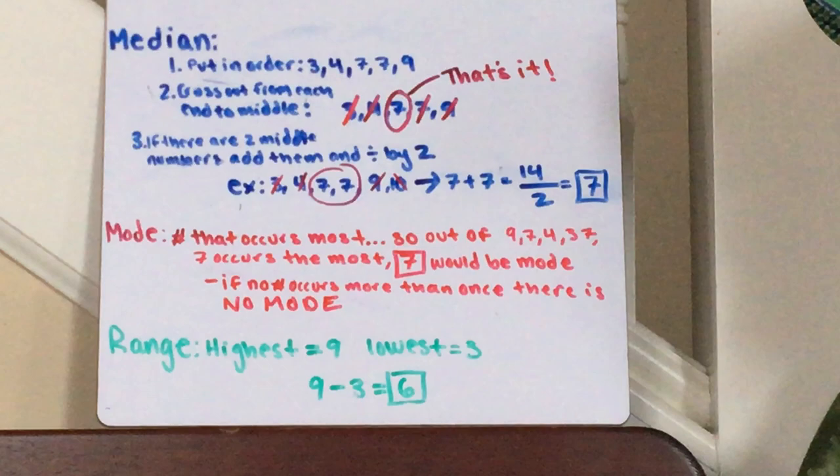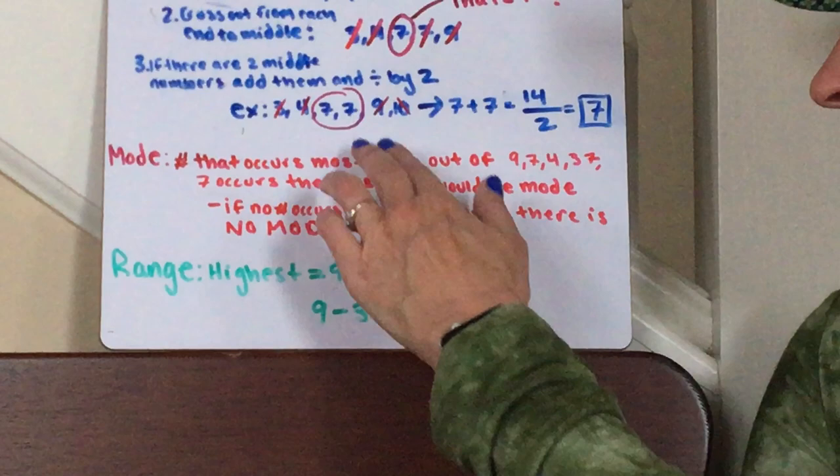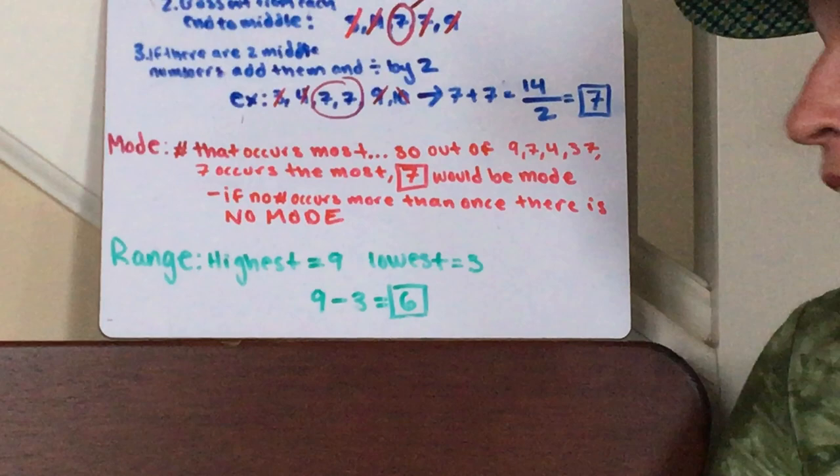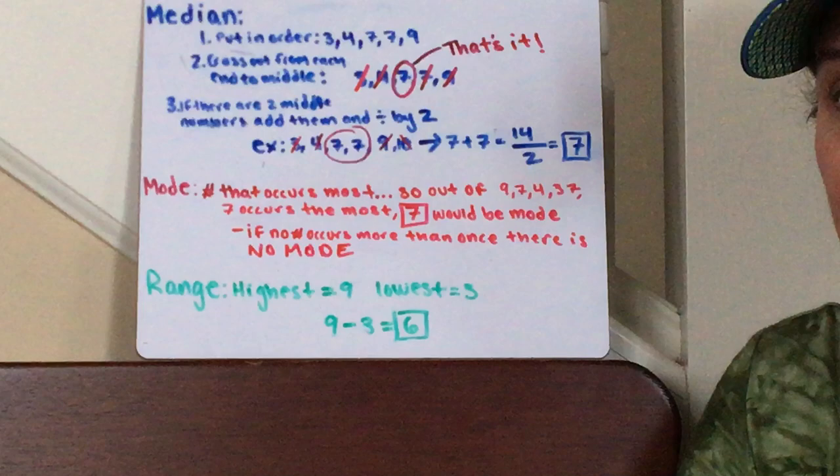Mode. Number that occurs most often. Seven occurred twice, that's obviously the mode. And the range is the highest number minus lowest, which would be nine minus three, which is six.